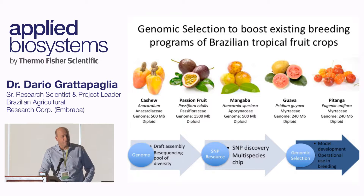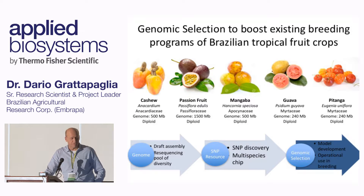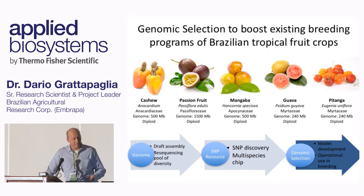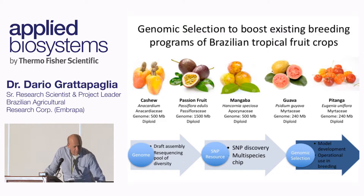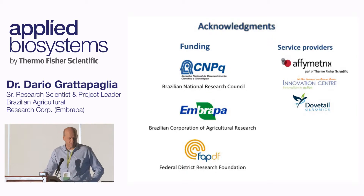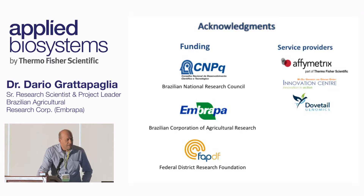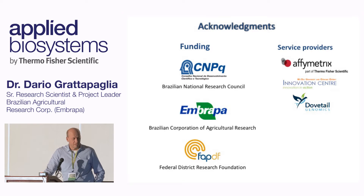We're beginning with tropical fruit crops, which are pretty much genome-orphans. Cashew is already growing. Passion fruit, which everybody knows, has very little done. Mangaba, guava, and some others — several interesting fruits that have not received any attention by breeders. By using SNP data at this level, I'm sure we can bring them very quickly into not only domestication but real breeding. I'd like to acknowledge funding by CNPQ, the Brazilian National Research Council, Embrapa, and the Federal District Research Foundation for the grants, and the service providers who worked with us in developing some of these methods. Thank you.